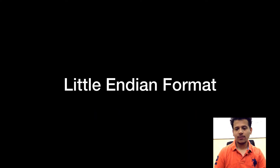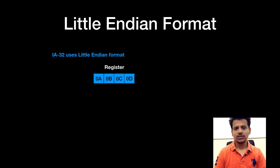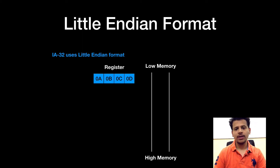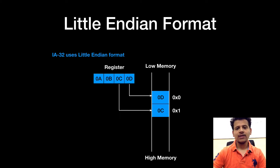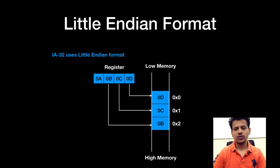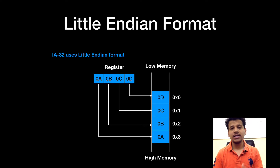We will start with the little endian format. Intel architecture 32-bit uses little endian format. This is our register. Its value is 0A, 0B, 0C and 0D. We want to save this value into the memory. So 0D will get saved at the lowest address in the memory. After that we will save 0C, then 0B, and 0A will be saved at the highest memory location. So this is known as the little endian format.